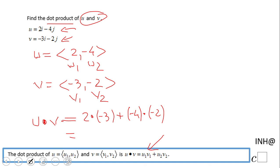So we end up with -6 plus 8. The dot product of u and v is nothing else than 2. That's it.